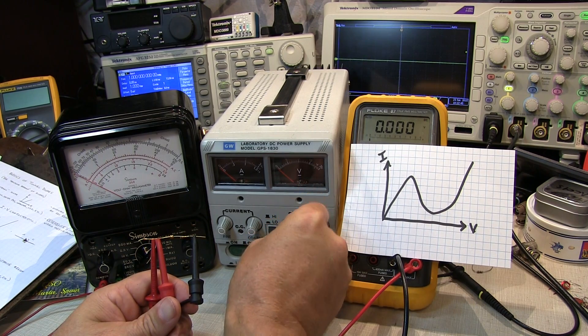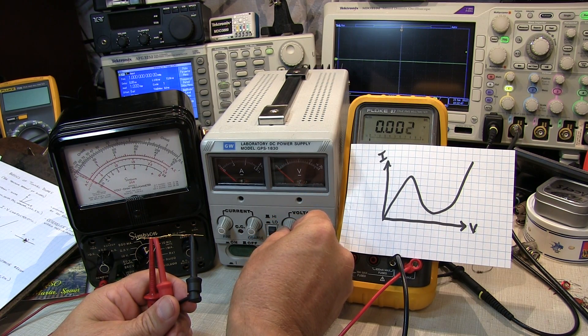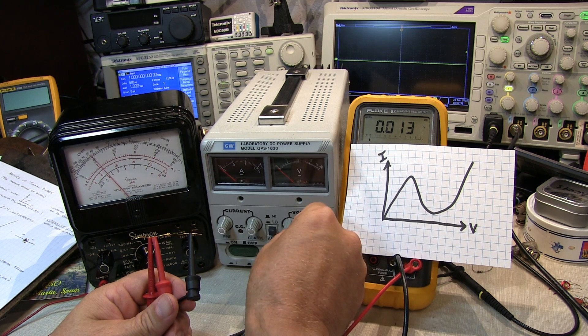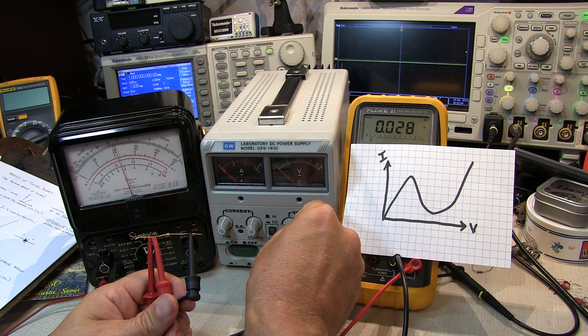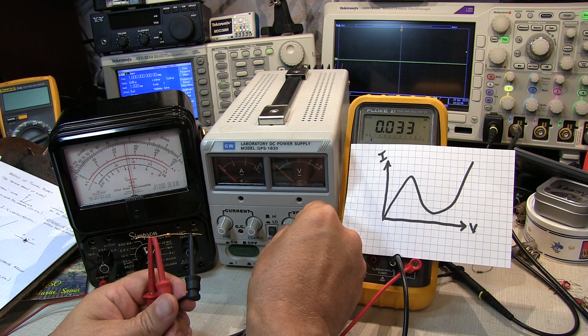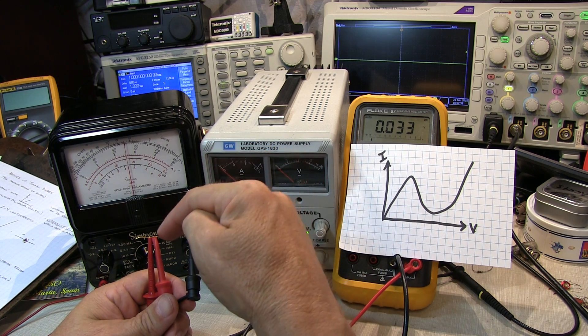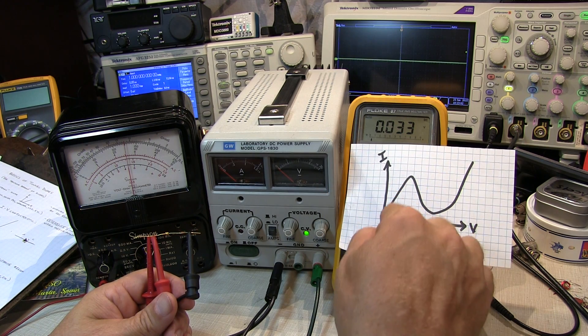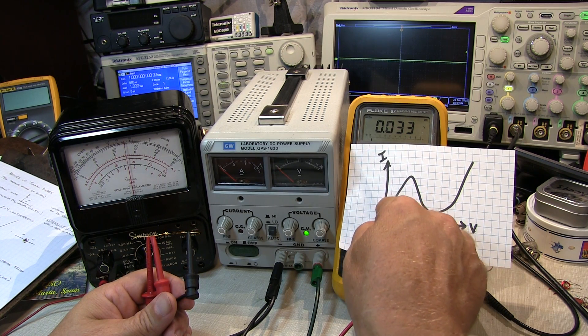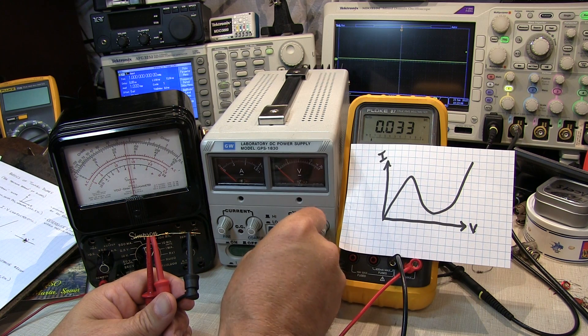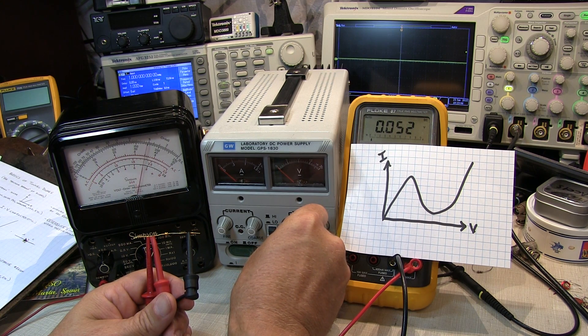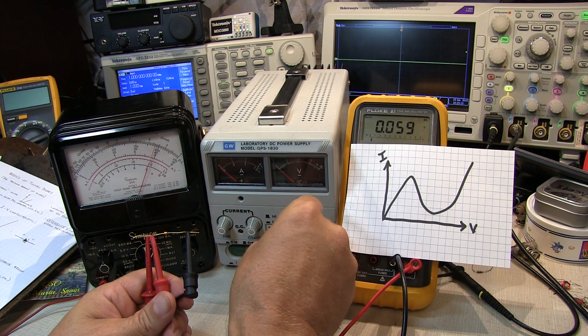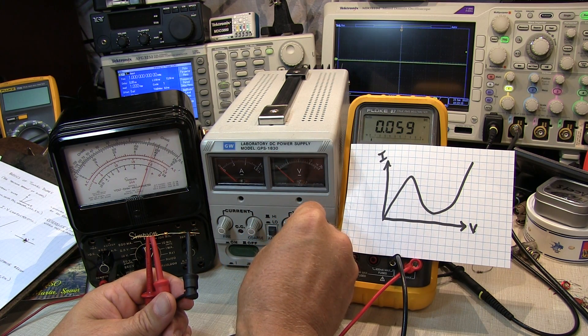As I turn the voltage up, we can see that the current is rising on the Simpson meter over here, and we can see the voltage is rising. So if we get up to right about mid-scale here, there's 5 milliamps of forward current through the diode. You can see the diode's sitting at about 33 millivolts, so we're kind of right on this portion of the curve right here. If I keep turning the voltage up, now we're up to about 60 millivolts or so forward voltage, running close to about 8 milliamps or so.